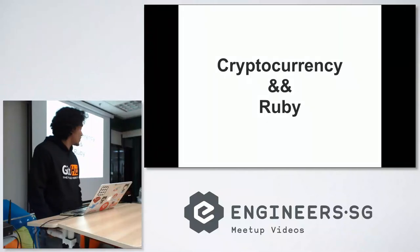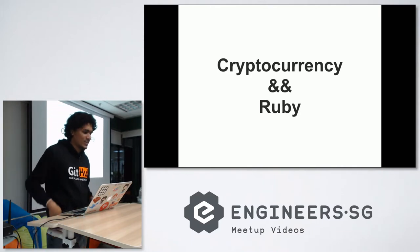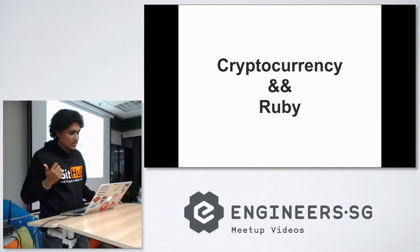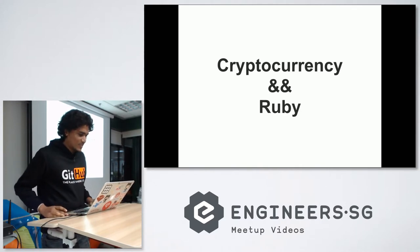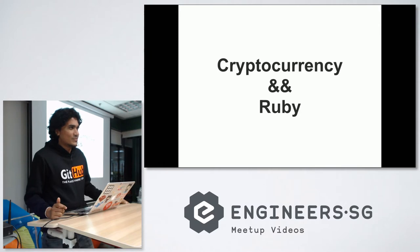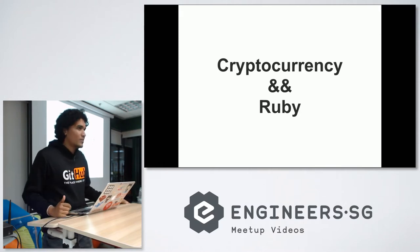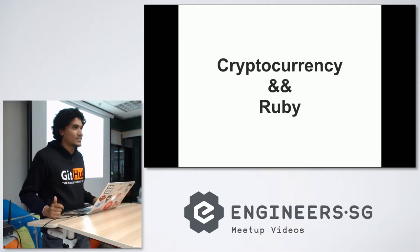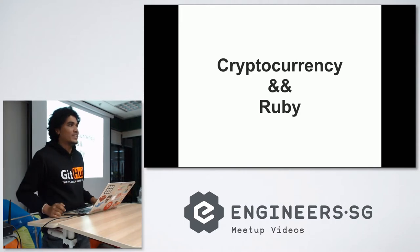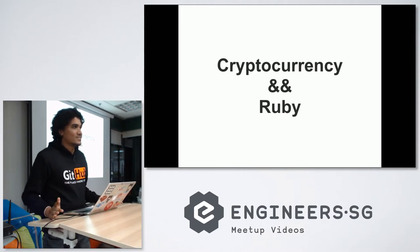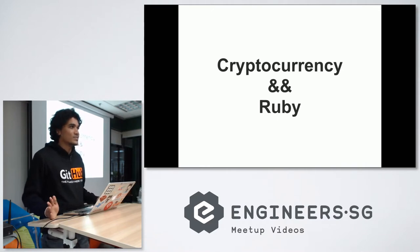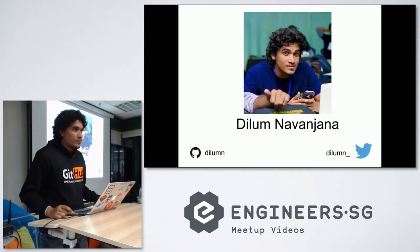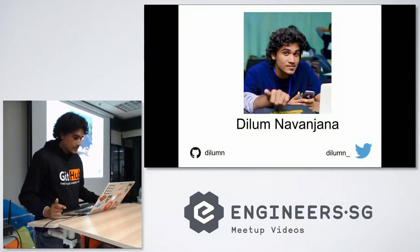This talk is about cryptocurrency and Ruby. In Singapore these days, everyone is talking about cryptocurrency, buying Bitcoin and Ethereum. Right now Bitcoin is going down, as is Ethereum. This is about how we, as Ruby developers, are going to do things with cryptocurrency and how we can impress our team lead or company CEO by doing implementations around Bitcoin or Ethereum. I am Dilumna Vanjana — here is my Twitter and GitHub if you want to follow.